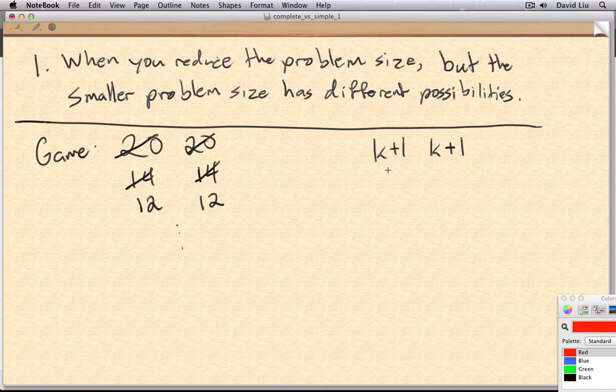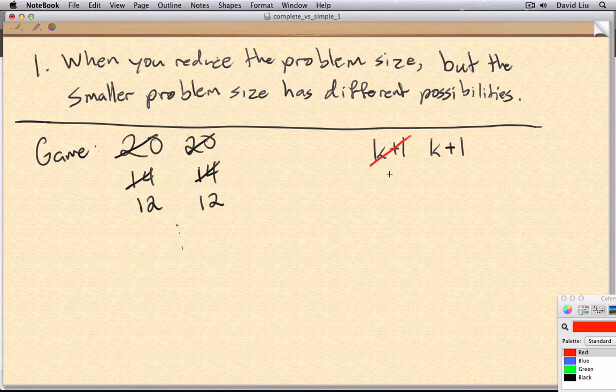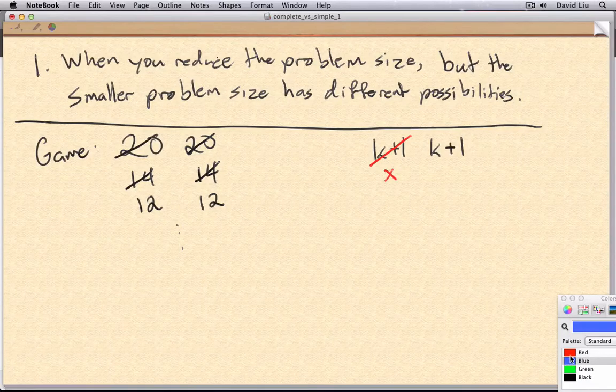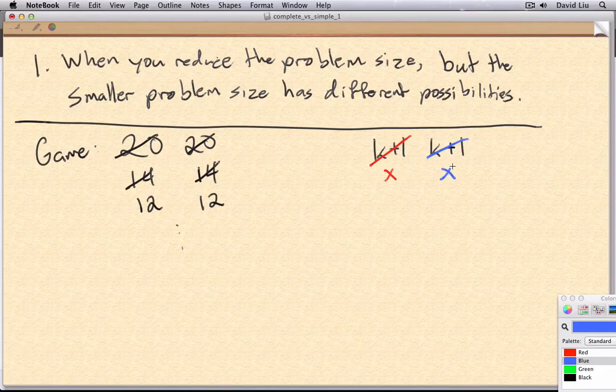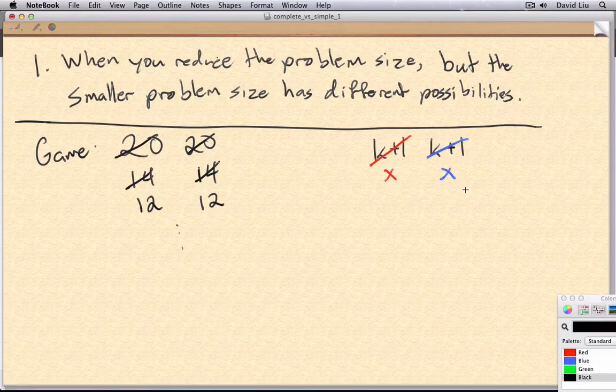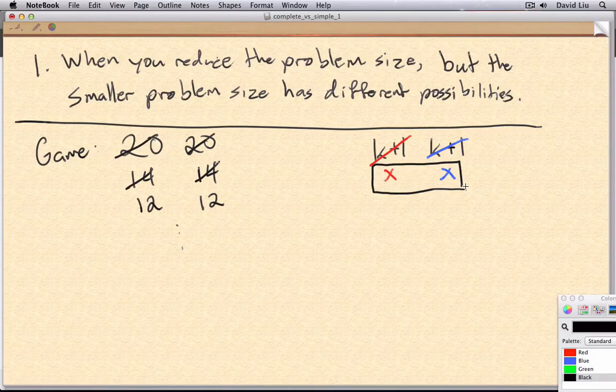...the game started off with two piles of size k+1, and then we said, what happens when player one makes the first move, say reducing one of the piles down to some number x? Well, we know that the optimal strategy for player two is to copy that move on the other pile, and we observed that now we have a game that really starts with x, and we've reduced the problem size.